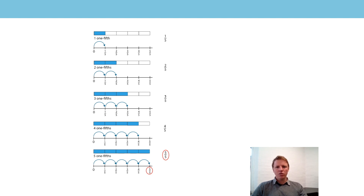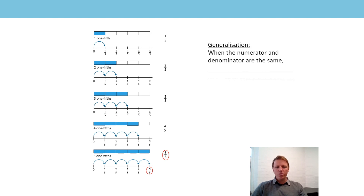Last lesson you will have said this generalisation: when the numerator and denominator are the same, the fraction is equivalent to one whole. Let's look at the bar model — the whole of the bar model is shaded in and we've moved the whole way along the number line. So when the numerator and denominator are the same, the fraction is equivalent to one whole.